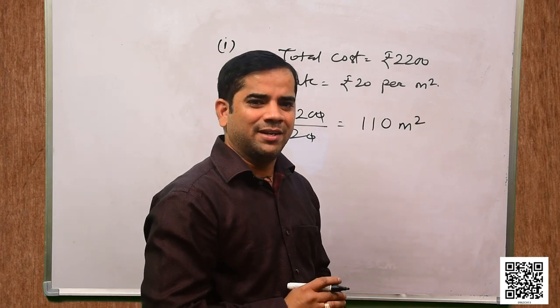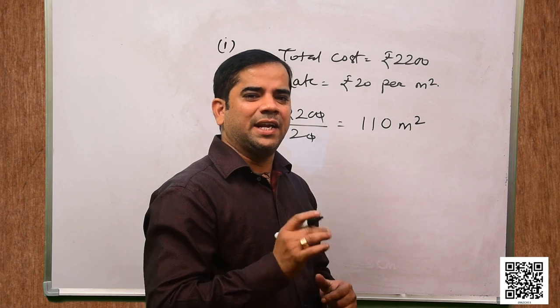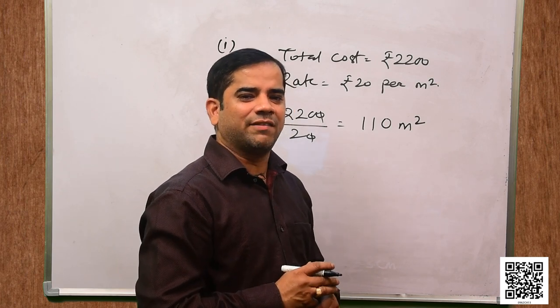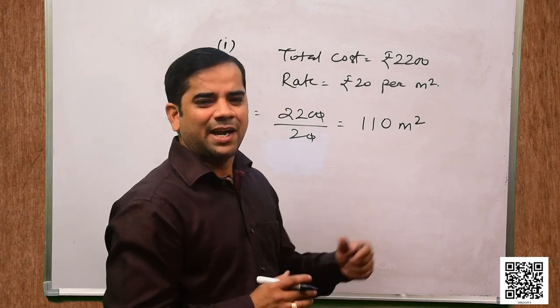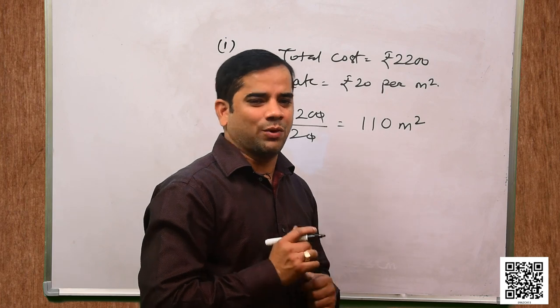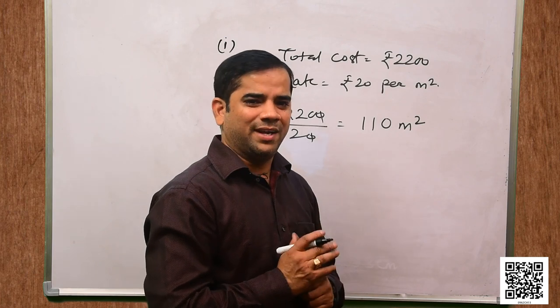Total cost is rupees 2200 and rate is rupees 20 per meter square. The area covered = 2200 / 20 = 110 meter square. So the inner curved surface area of the vessel is 110 meter square.